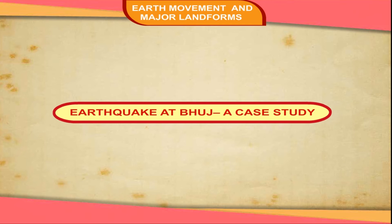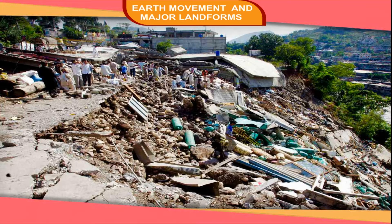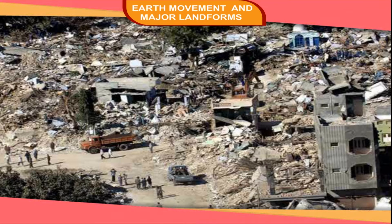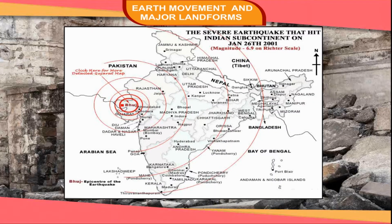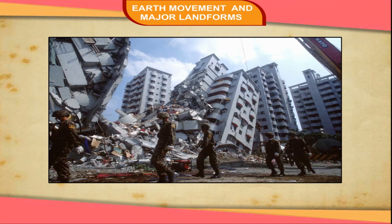Earthquake at Bhuj — A Case Study. A powerful earthquake measuring about 7 on the Richter scale hit the Indian state of Gujarat on 26 January 2001. It caused great damage to life and property, killing more than 20,000 people and destroying nearly 4 lakh houses. About 16 million people were directly or indirectly affected by the earthquake. The earthquake had its epicenter near Bhuj in Kutch. The region around Bhuj therefore suffered the maximum damage. The rules for constructing earthquake-resistant buildings should have been strictly followed, which could have restricted the collapse of buildings — the main cause of deaths in an earthquake.